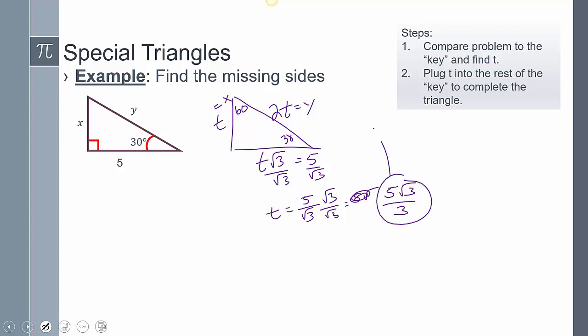So then I take that, plug it in, plug it in. So I'm going to get 5 root 3 over 3 equals X. And 2 times 5 root 3. So that's going to be 10 root 3 over 3. That's going to equal Y.